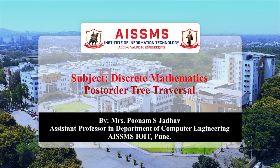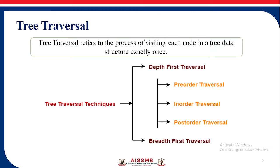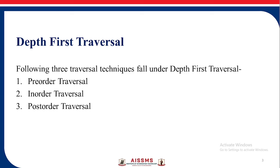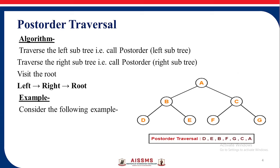Today we are going to learn the post-order tree traversal technique which comes under the tree concept in discrete mathematics. The tree traversal refers to the process of visiting each node in a tree data structure exactly once. The tree traversal technique is divided into two parts: depth first traversal and breadth first traversal. Depth first traversal has three traversals: pre-order, in-order, and post-order traversal. Today we are going to learn the concept of post-order traversal and see related examples.